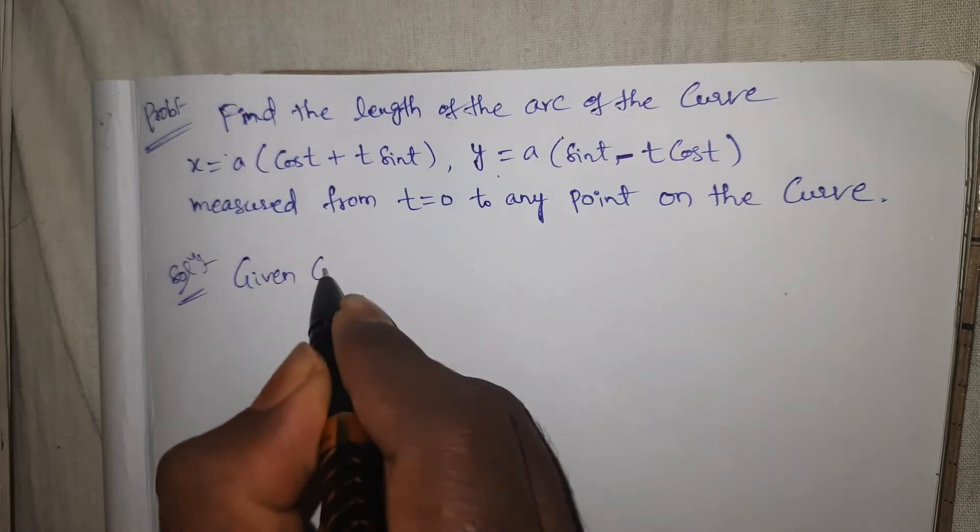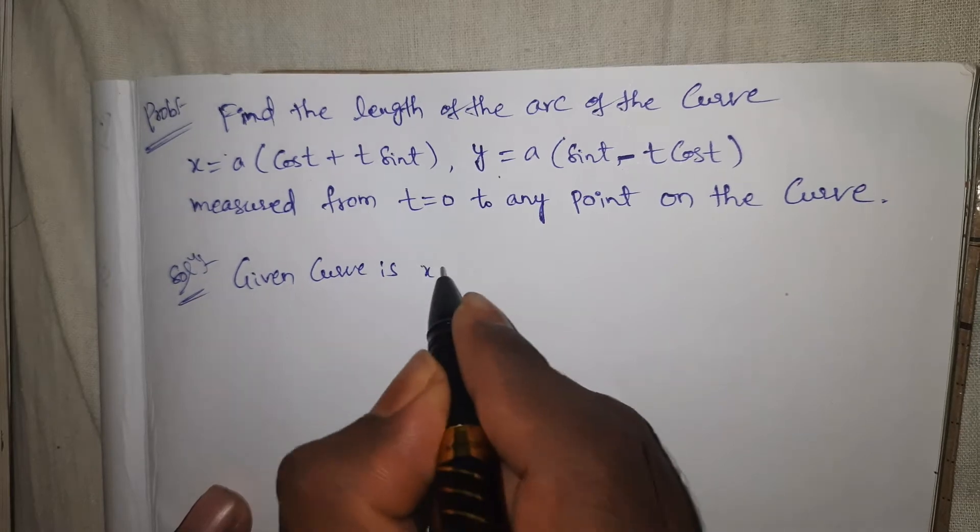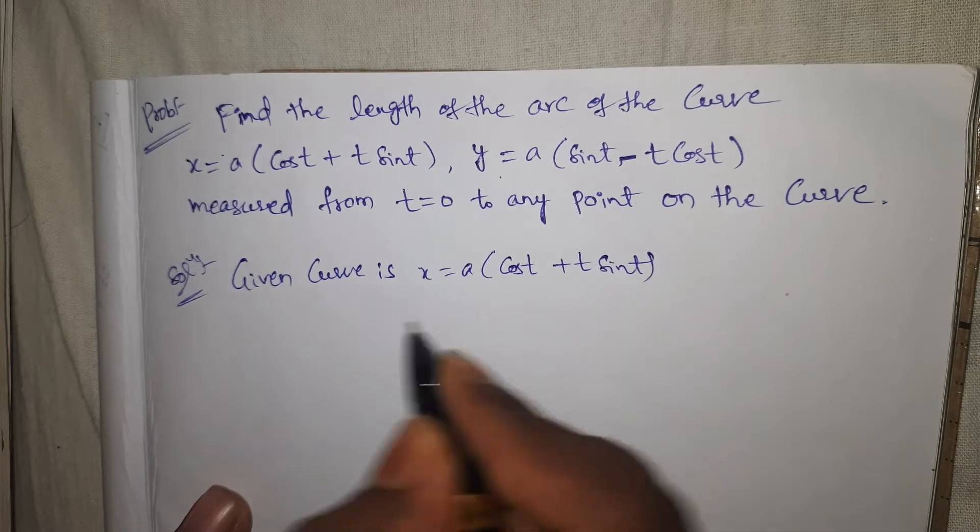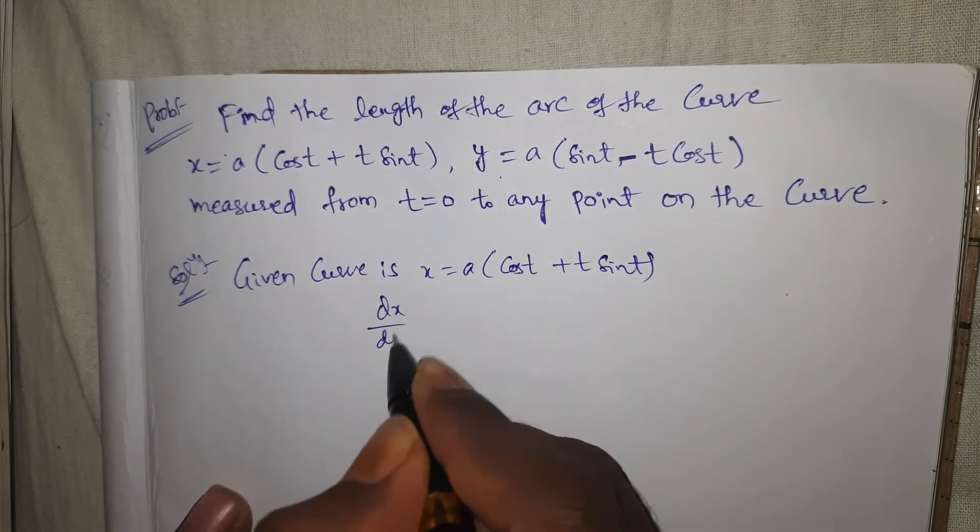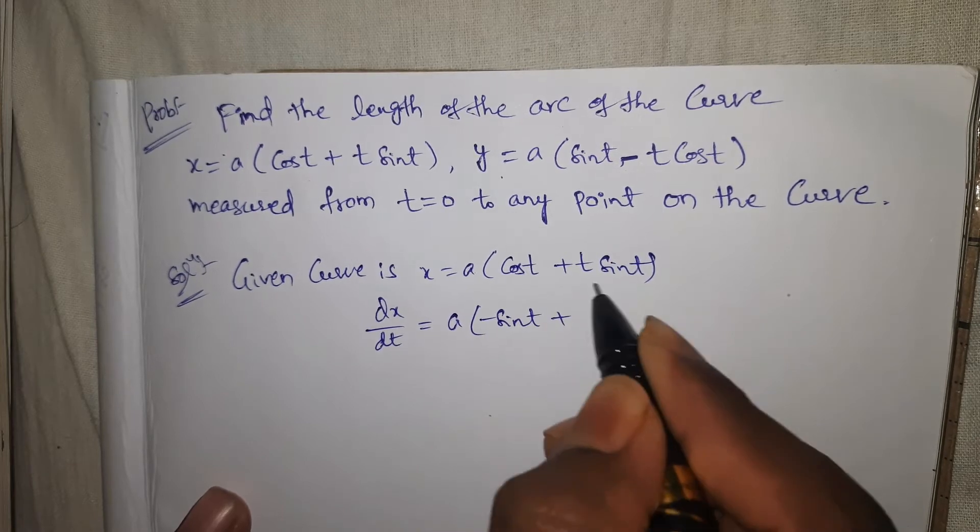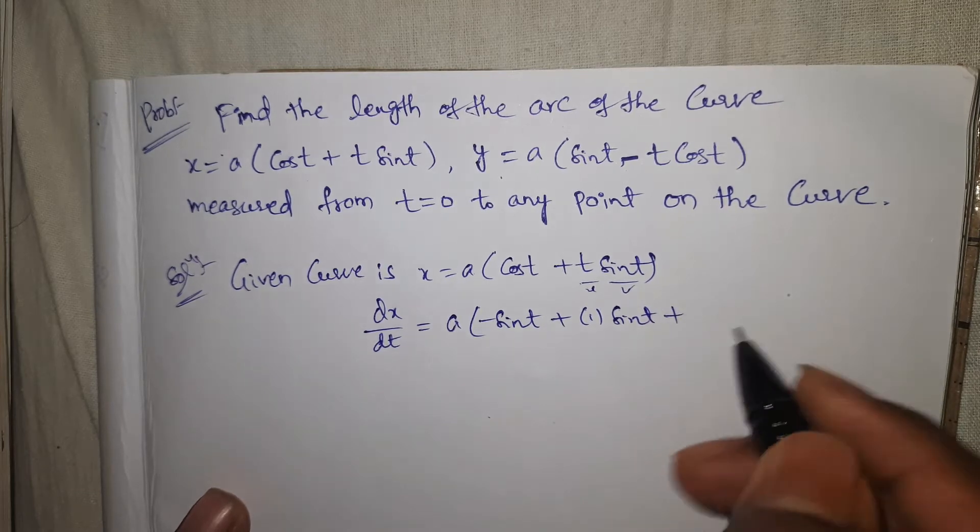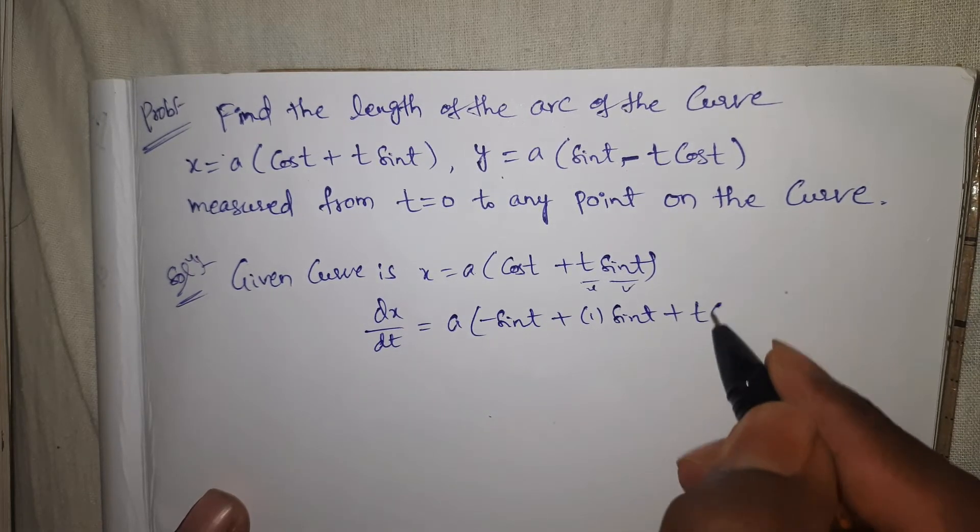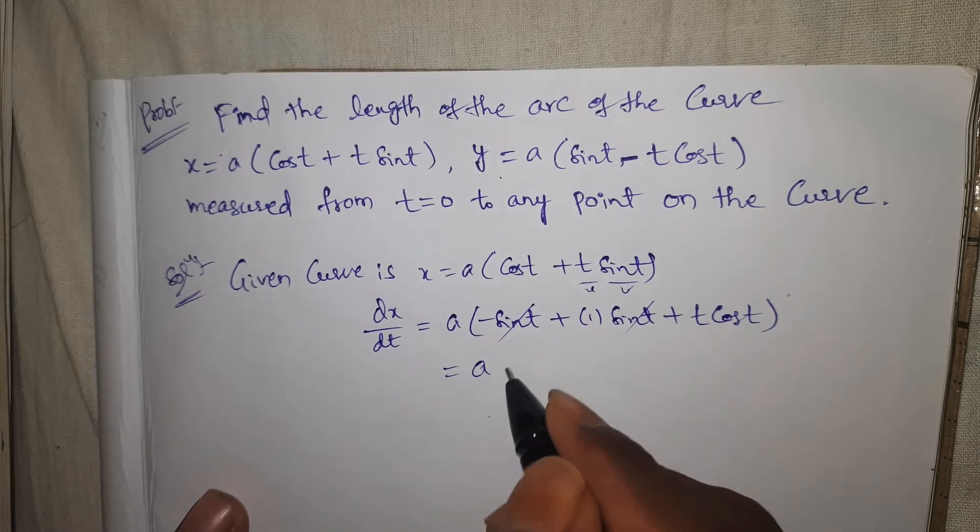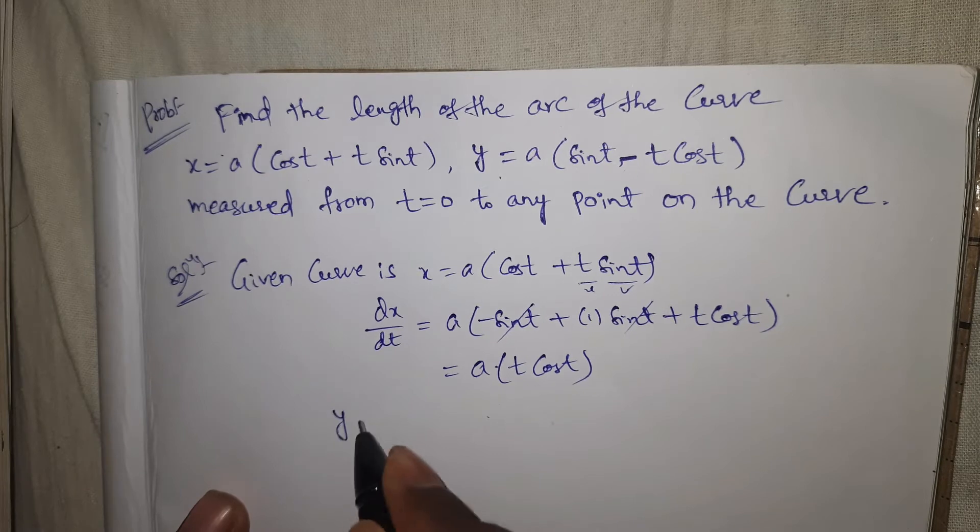Given curve is x = a(cos t + t sin t). dx/dt = a(-sin t + sin t + t cos t). Sin t gets cancelled, so dx/dt = a(t cos t).